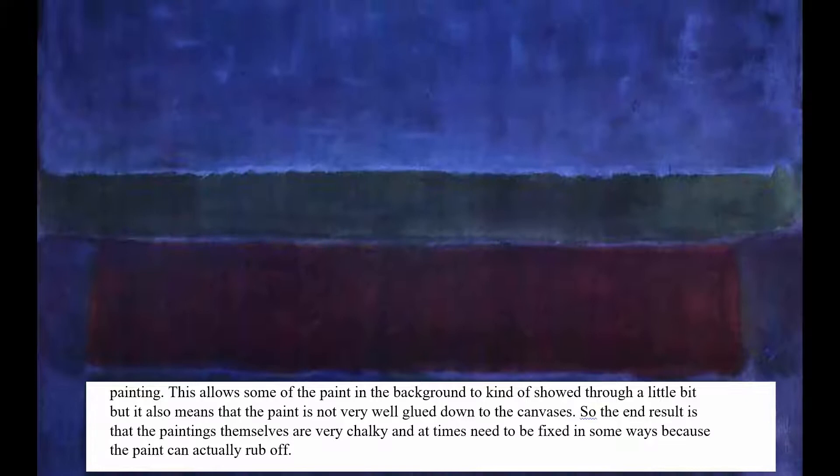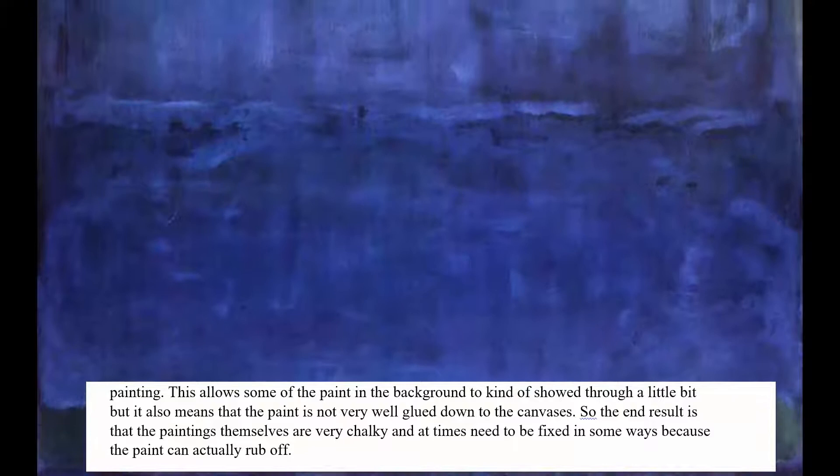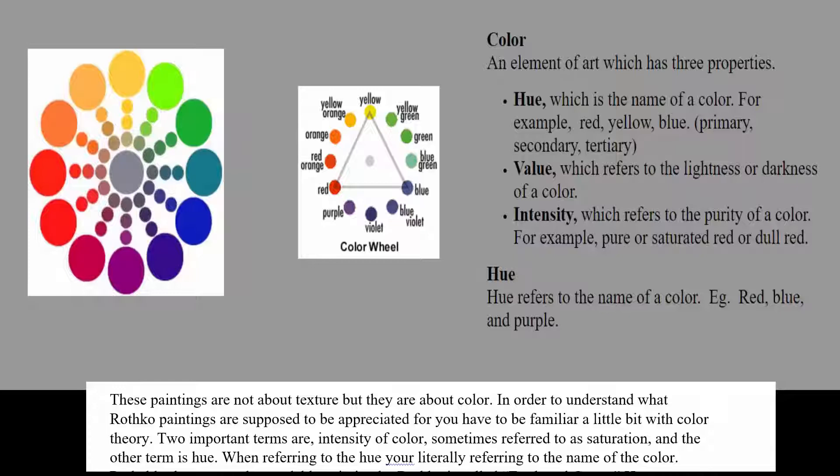If you look at the paintings, you'll see this shows through — they look a little chalky. Conservators are having trouble with these paintings because sometimes they rub off and need to be fixed. So the paintings aren't about texture; they're more about color and form. In order to understand a Rothko painting, you have to know a little bit about color theory and how it works.